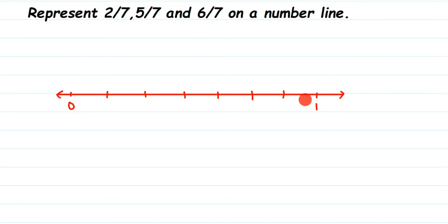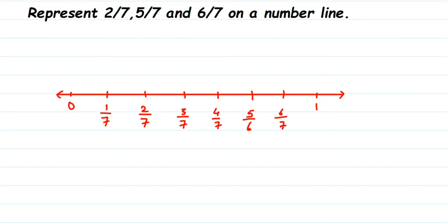Now start marking: the first part is one by seven, the second is two by seven, then three by seven, four by seven, five by seven, six by seven. The last one is seven by seven, which equals one. At the start, zero can also be written as zero by seven.